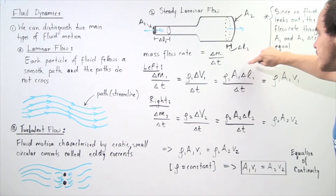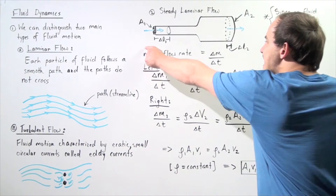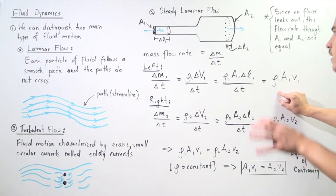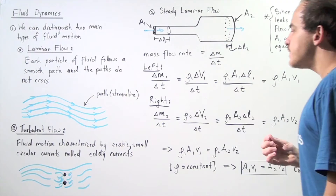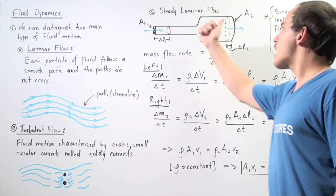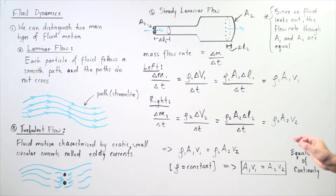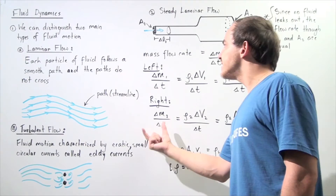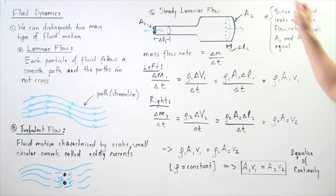Notice that change in L divided by change in time is displacement divided by time, which is simply velocity. So the mass flow rate on the left side of the pipe equals the density of the fluid on the left side multiplied by the cross-sectional area A1 multiplied by the velocity V1. Following the same procedure for the right side, we get the same formula with subscripts replaced by 2: density 2 times A2 times V2.